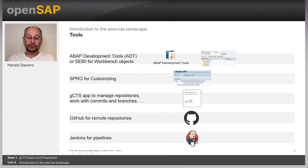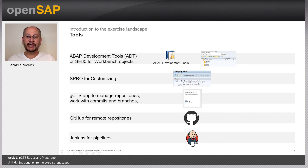And then of course we have the central app, the Fiori app, to work with GCTS itself, which will be accessed via your browser. On top of that we will look once in a while into GitHub to see how the overall GitHub repository looks. And last but not least we will access Jenkins, which will also happen via your browser.